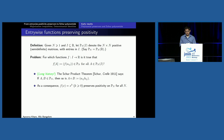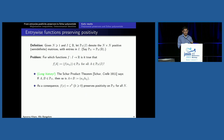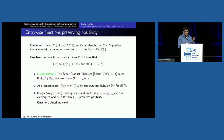The class of preservers is closed under sums, products, positive multiples, and pointwise limits — this is a closed condition. It contains 1 and x, hence the monomials, hence polynomials with positive coefficients. And you can take limits of Taylor polynomials and check that every power series with non-negative coefficients c_k preserves positivity. This is a very old result — Pólya and Szegő observed this in their book in 1925, and they asked: is there anything else?